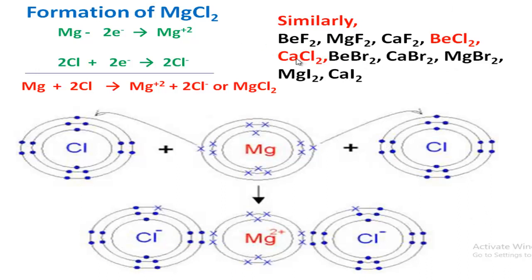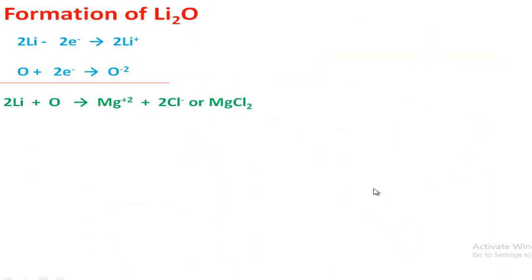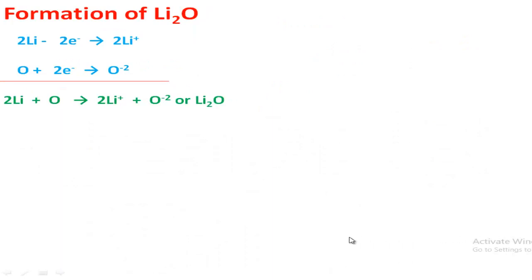Similarly, you can explain other examples. Among them, barium chloride and calcium chloride are very very important, so you must practice those. Now, the formation of lithium oxide ionic compound: two metal atoms release two electrons and one non-metal atom accepts two electrons. The electronic configuration of lithium is 2-1, so two lithium atoms release two electrons and convert into two lithium ions.